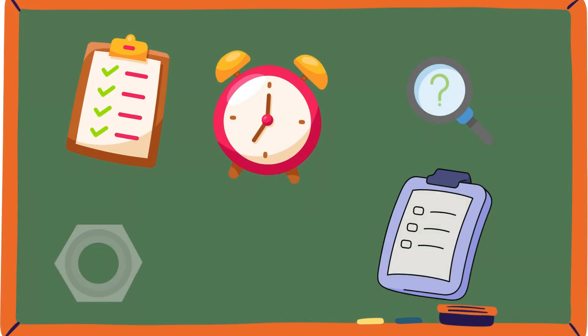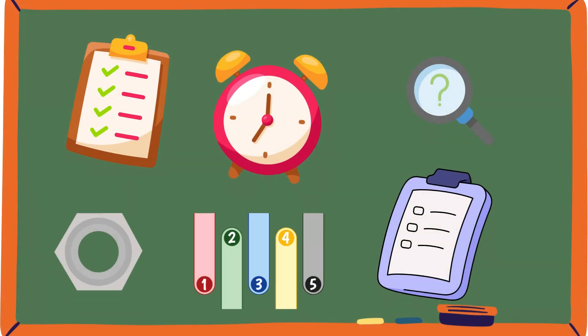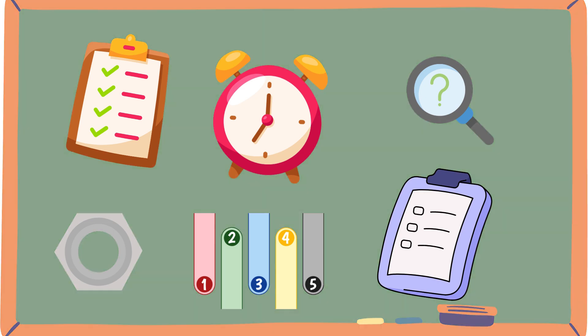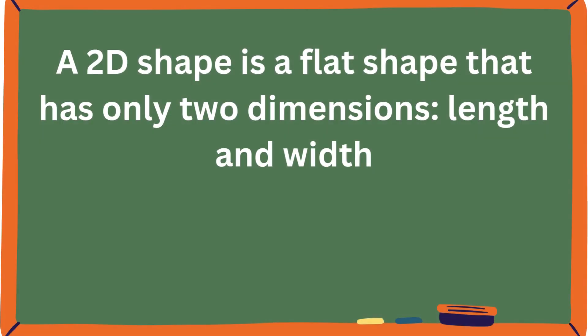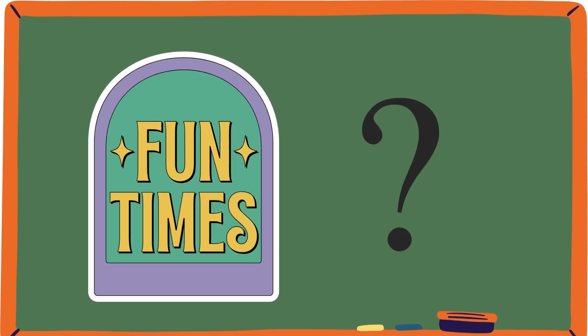2D shapes are all around us. They can be found on paper, in pictures, and even in things you see every day. 2D shapes are flat, meaning they don't have any height or depth, just length and width. At the end of today's session, we are going to have a super fun quiz time.